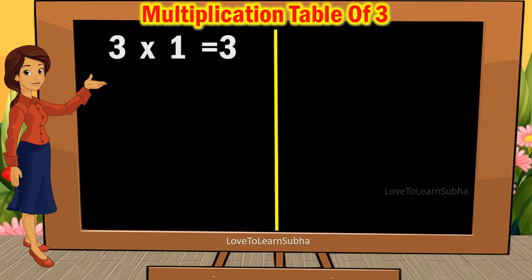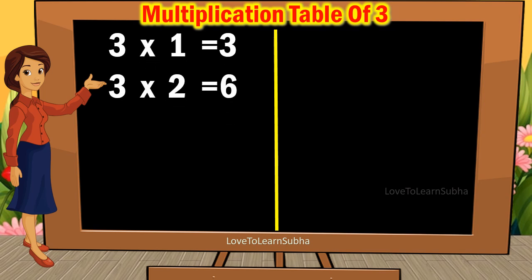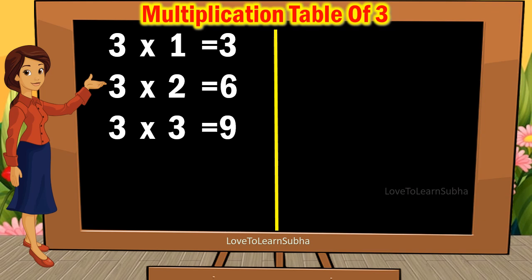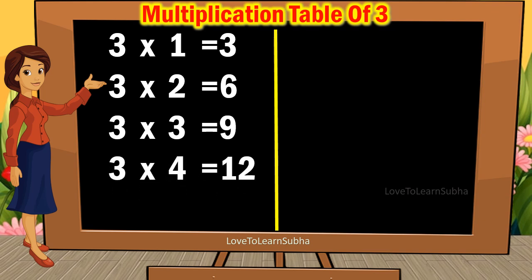3 1s are 3, 3 2s are 6, 3 3s are 9, 3 4s are 12, 3 5s are 15,